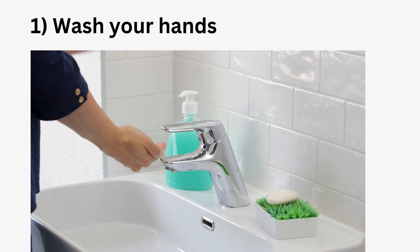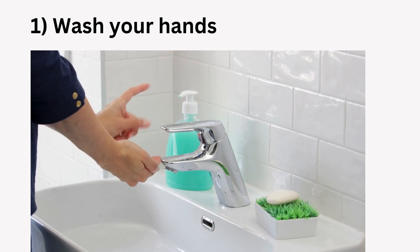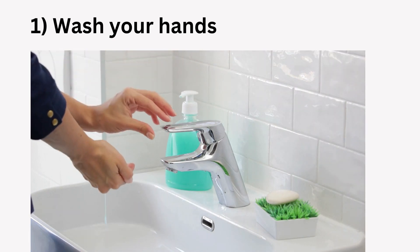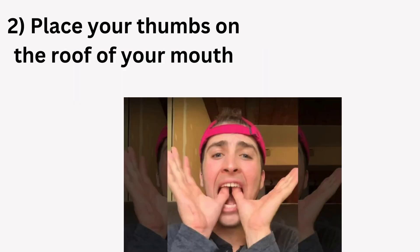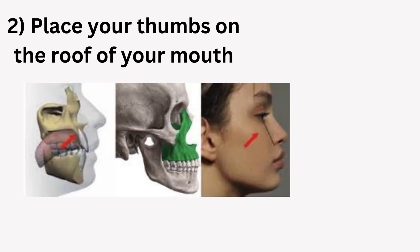Wash your hands thoroughly to avoid introducing any bacteria into your mouth. Sit comfortably, ensuring your back is straight. Positioning: place your thumbs on the roof of your mouth, specifically on the palate. Your thumbs should be positioned near the back of the palate, but not too close to the throat. Applying pressure: gently press upwards with your thumbs against the palate. The pressure should be firm but not painful. You can either hold the pressure steady or apply a rhythmic, pulsing motion, depending on your preference.